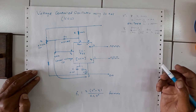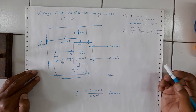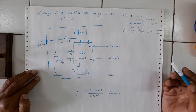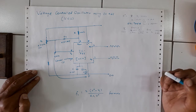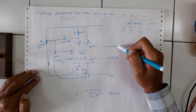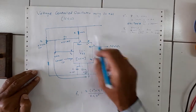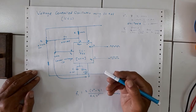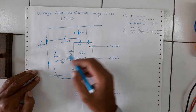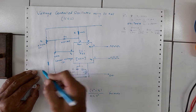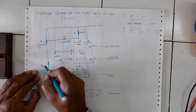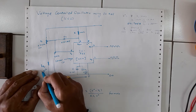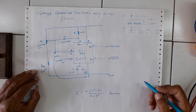So the output frequency can be tuned or changed. The typical example product is the Signetics IC 566 VCO, which provides simultaneous square wave and triangular wave outputs. The frequency of oscillation is determined by the RC time constant, where the resistor used is R1, which has a value of 15 kilohms.